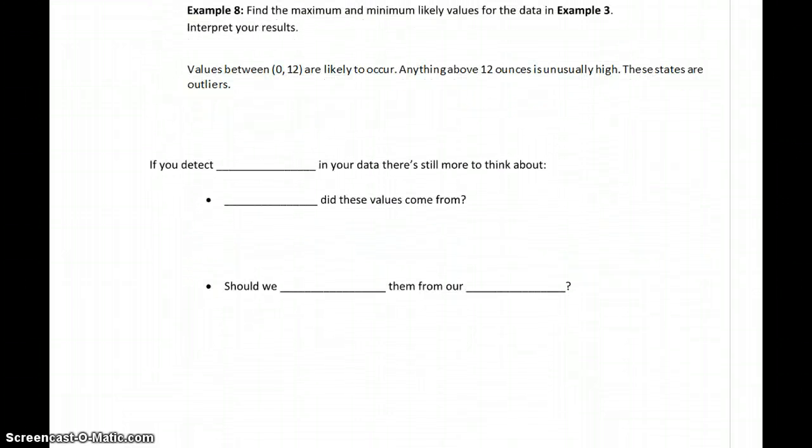So we have methods now for calculating outliers, whether we have symmetric or moderately skewed distributions, or for dealing with highly skewed distributions. Unfortunately the conversation doesn't really end there. We won't go into this a lot in this class, but if we detect outliers in our data, there's a little bit more we have to think about.